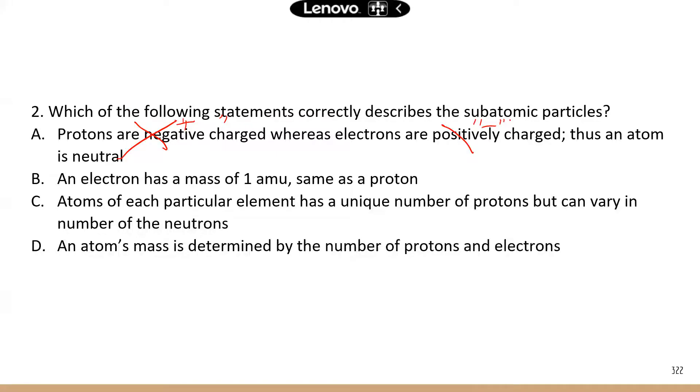Option B, an electron has a mass of one amu atomic mass unit, same as a proton. Now, a proton does have a mass of one, but electrons do not have any mass. So B is not correct.